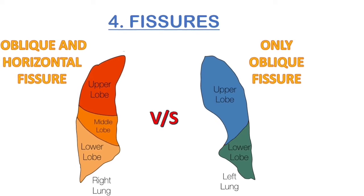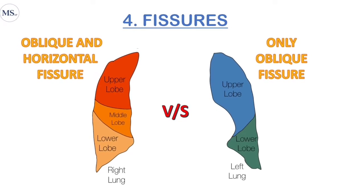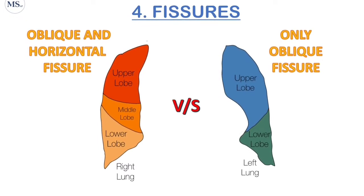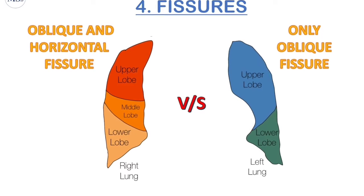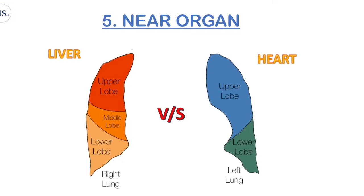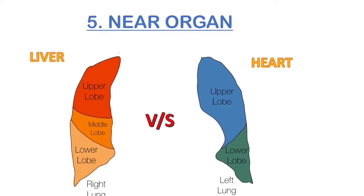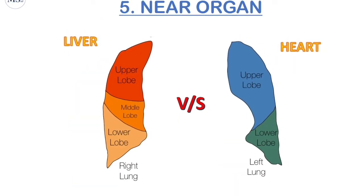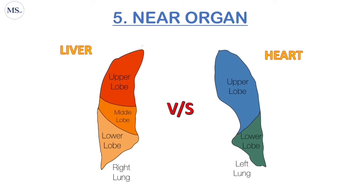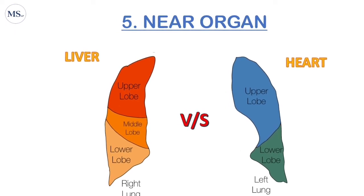To summarize the fissure difference: the right lung has two fissures — the oblique fissure and the horizontal fissure — while the left lung has only one fissure, the oblique fissure. The fifth difference is the nearby organs. Near the right lung there is the liver, which is adjacent to the diaphragmatic surface. Near the left lung, the organ present is the heart, which sits in the cardiac notch in the left border.